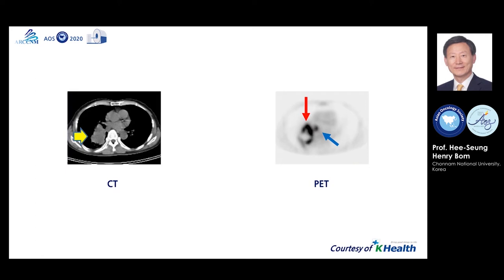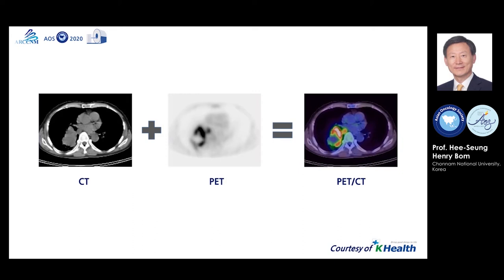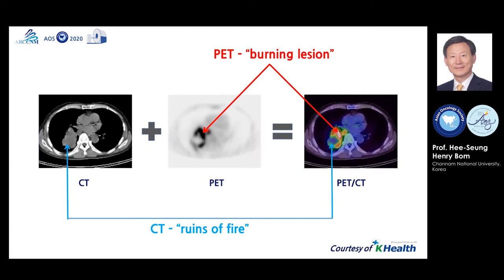The following several slides I received from K-Health, Manila, Philippines — I appreciate their support. A chest CT shows a large mass in the right lower lung, as shown by a yellow arrow. Active tumor cells are located in the medial part of the tumor, as shown by a red arrow in the right PET image. This metabolically active site is the target for biopsy. A metastatic hilar lymph node is also shown by a blue arrow. We can make a hybrid image by combining CT and PET, which we call PET-CT. PET-CT shows both anatomical and functional images.